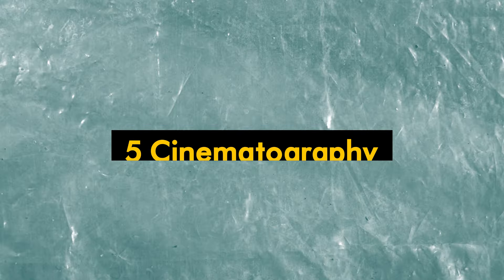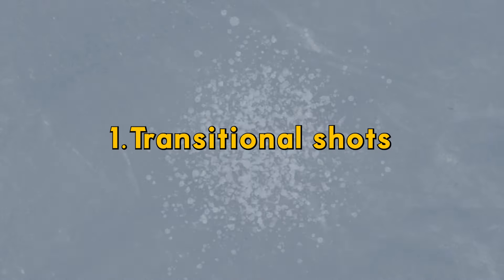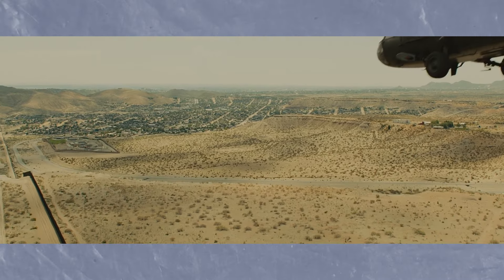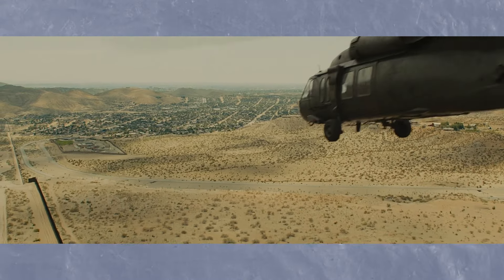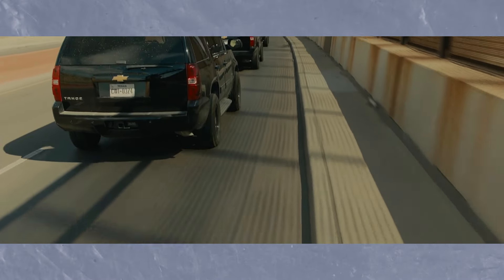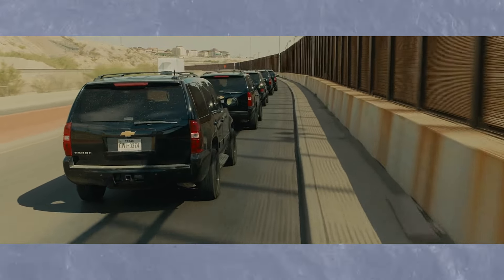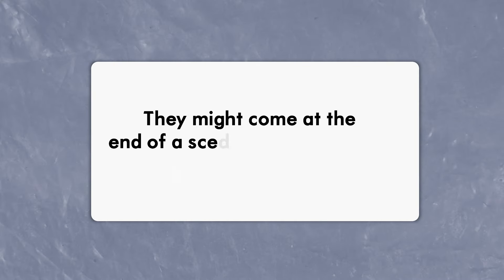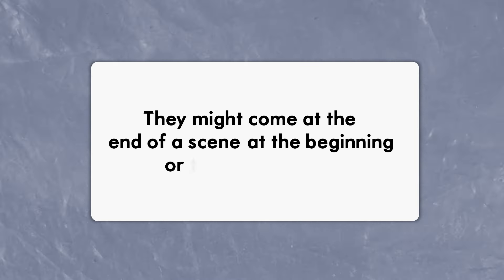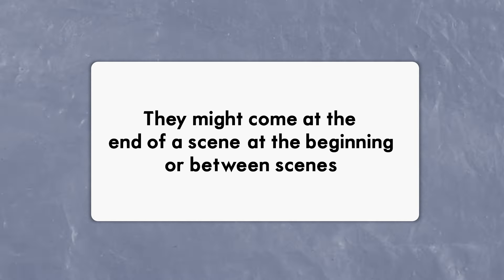Let's look at five cinematography techniques. Transitional shots: some shots are not part of a scene themselves but instead serve to connect two scenes together. We can think of these as transitional shots. They might come at the end of a scene, at the beginning, or between scenes.